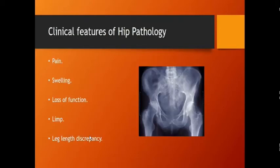What are the clinical features of hip pathology? Pain is the first and foremost complaint. It is the chief complaint in orthopedics. We can also have swelling, loss of function, limp, and leg length discrepancy — a term I will explain in coming slides. Pain can be on the anterior, lateral, or posterior side of the hip, and each has its own importance.